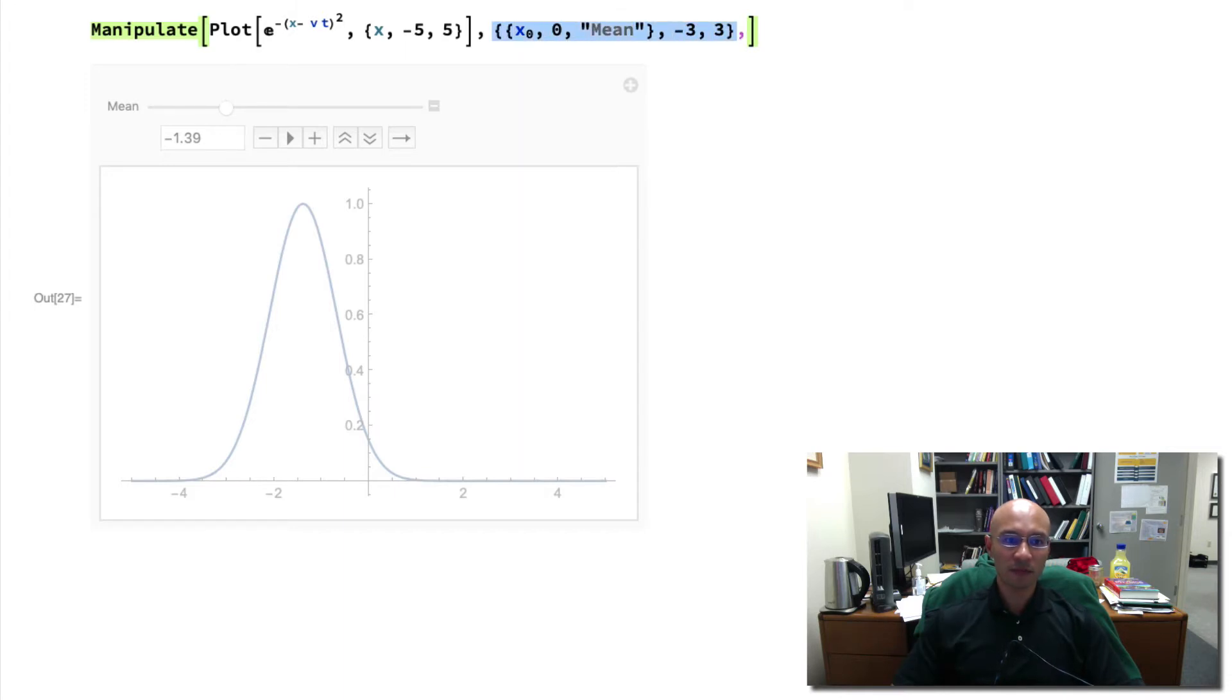And so I can just copy and paste. But the first one I'm going to change to v, we'll call it velocity. And then we will change the second one from v to t, and we'll call it time. We want time to go only from 0 to, say, 4.